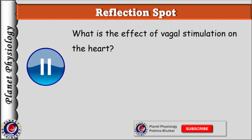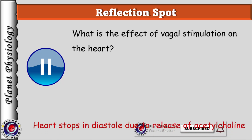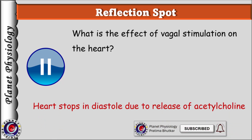Before we begin, pause the video and try to recall what happens to the heart in response to vagal stimulation and why. As you might have guessed, vagal stimulation causes stoppage of the heart during diastole, and it is due to release of acetylcholine.